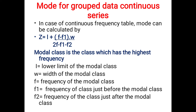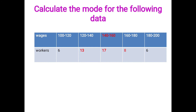Let me explain with an example. Calculate the mode for the following continuous data: wages and workers — 100 to 120: 6 workers; 120 to 140: 13 workers; 140 to 160: 17 workers; 160 to 180: 8 workers; 180 to 200: 6 workers. Here 17 is the most occurring frequency, so the modal class is 140 to 160. The lower limit L is 140.